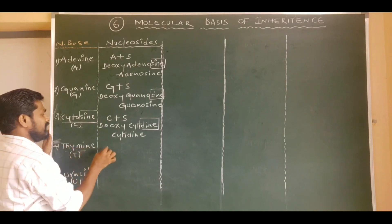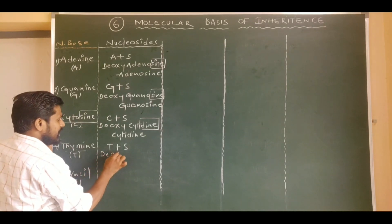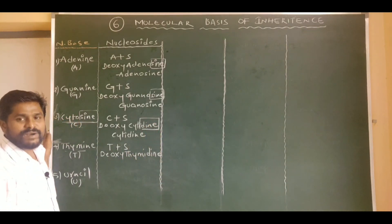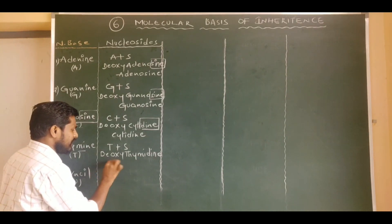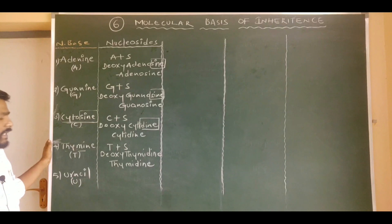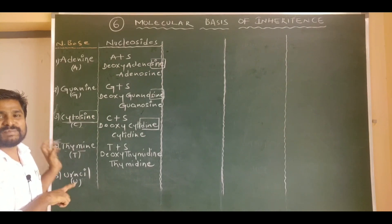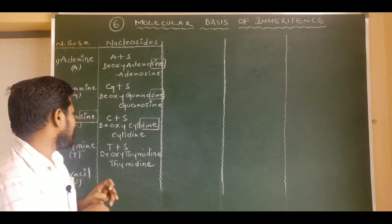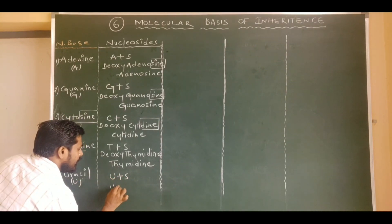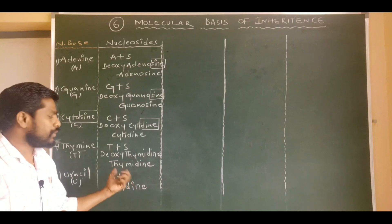When we move on to thymine, the combination of thymine and pentose sugar forms a nucleoside: deoxythymidine in the case of DNA, and simply thymidine in the case of RNA. For the last nucleoside, the one having uracil as a nitrogen base, which is present only in RNA and not in DNA — the combination of uracil and pentose sugar is simply called uridine. Uridine is present only in RNA.